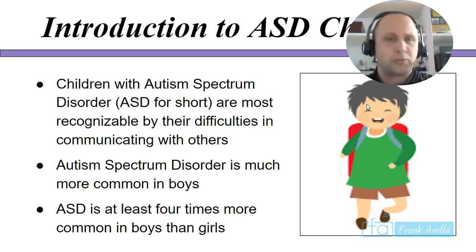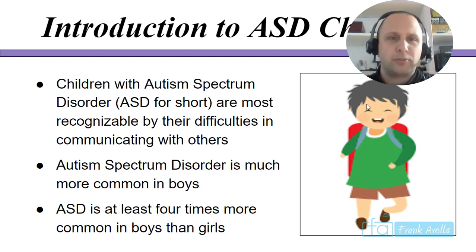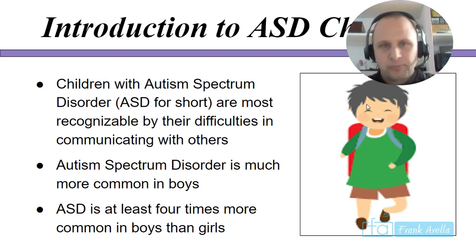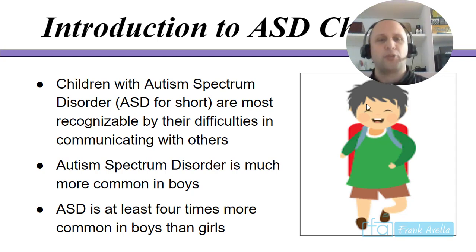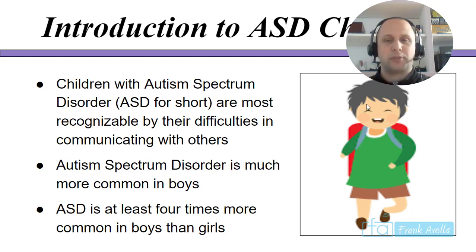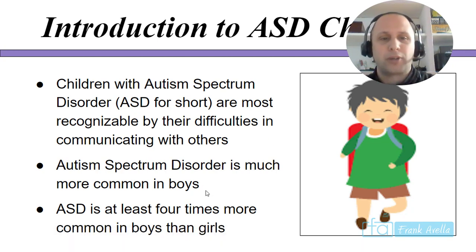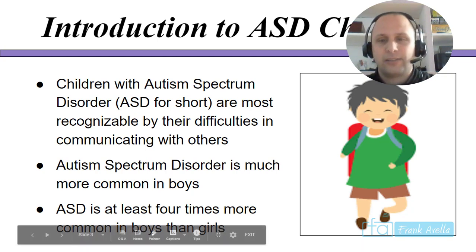Children with autism spectrum disorder — pronounced ASD in education — are most recognizable by difficulties in communicating with others. Before I was in teaching, I didn't really understand that autism was basically a communication disorder. Another important fact: ASD is at least four times more common in boys than girls. That's a very big number.